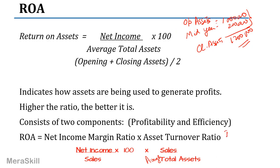This is in a DuPont analysis where this kind of breakup is made. The return on assets equals the profitability ratio — net income by sales multiplied by 100 — times the efficiency ratio.